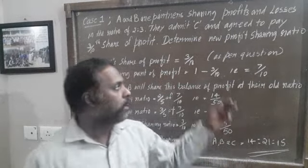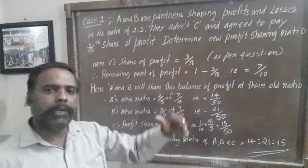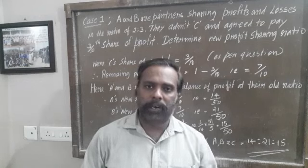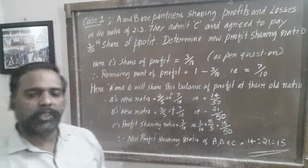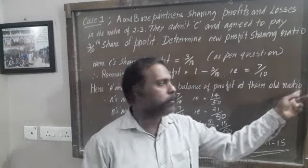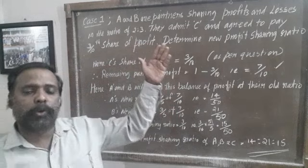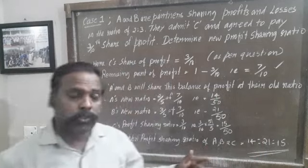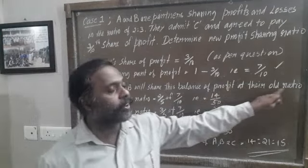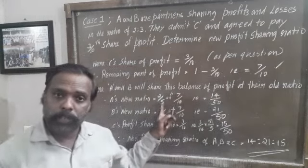C's share of profit is 3/10 as per the question. The balance of profit remaining is 7/10, and A and B will share this balance at their old ratio of 2:3.